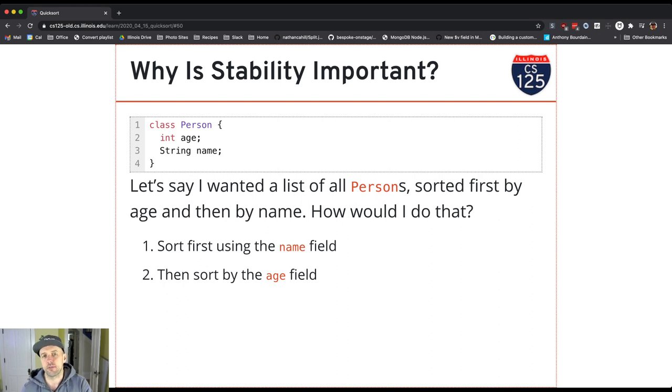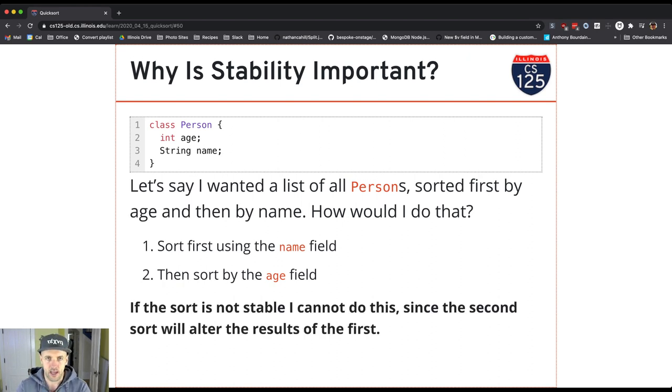Quick sort of the algorithms that we talked about is unstable. And that's another feature of quick sort that is potentially problematic.